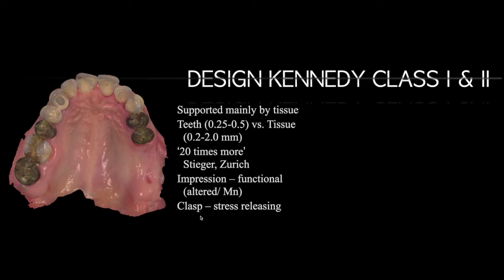One critical point when designing the metal framework is the direct retainer, or clasp. When you design a clasp for Kennedy class 1 or 2—where the tooth has a missing edentulous space on the distal—you must choose a stress-releasing clasp design only, not any other type. We'll look at the options for stress-releasing clasps. The main big difference for class 1 and 2 is that because the prosthesis is tissue-supported with greater movement, you need to carefully choose the clasp assembly.